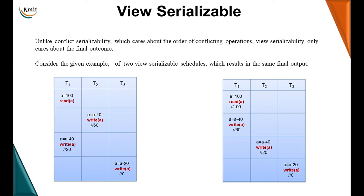Unlike conflict serializability, which cares about the order of conflicting operations, view serializability only talks about the final outcome. The transactions can be executed in any interleaved order, but the final output should be the same.